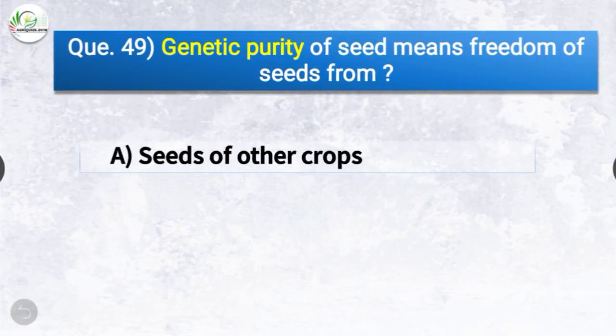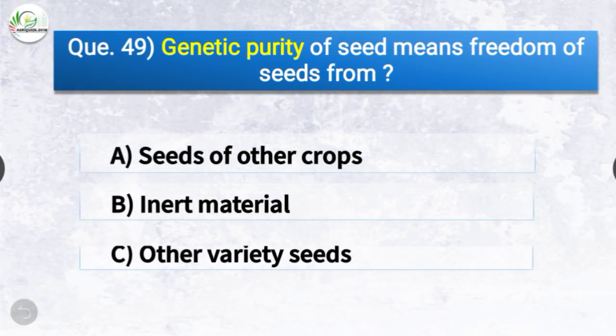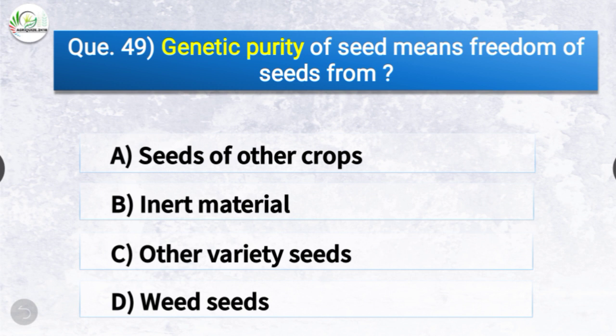Question number forty-nine: The genetic purity of seed means freedom of seeds from — the options are seeds of other crop, inert material, other variety seeds, or weed seeds. The correct answer is option C — other variety seeds. Genetic purity of seed means freedom of seeds from other variety seeds.